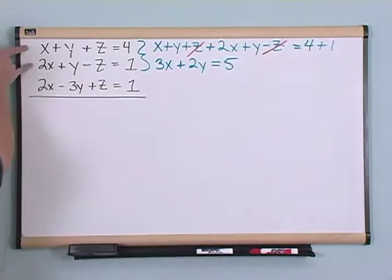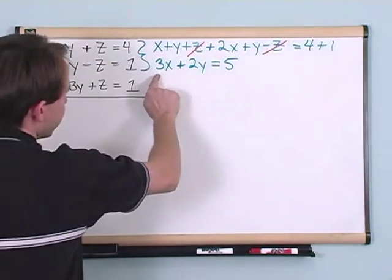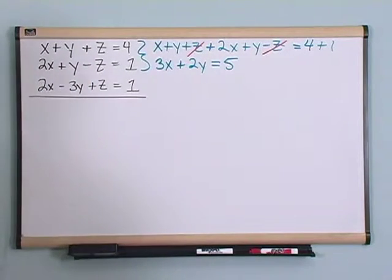So notice we've taken these two equations, which had three variables, and we've done our magic and we've reduced it to an equation still in two variables. So that's good.